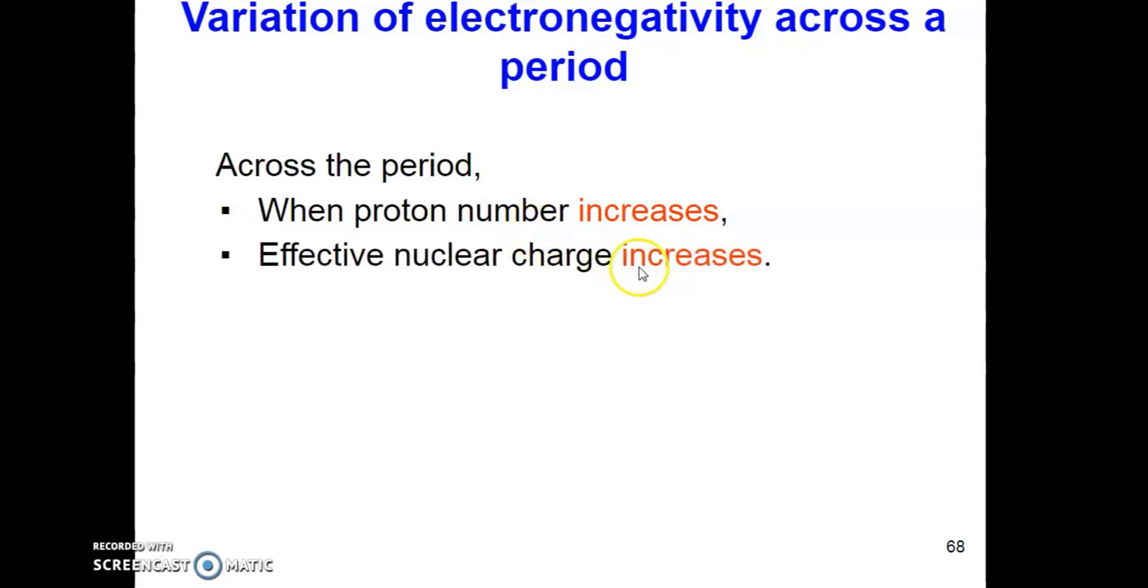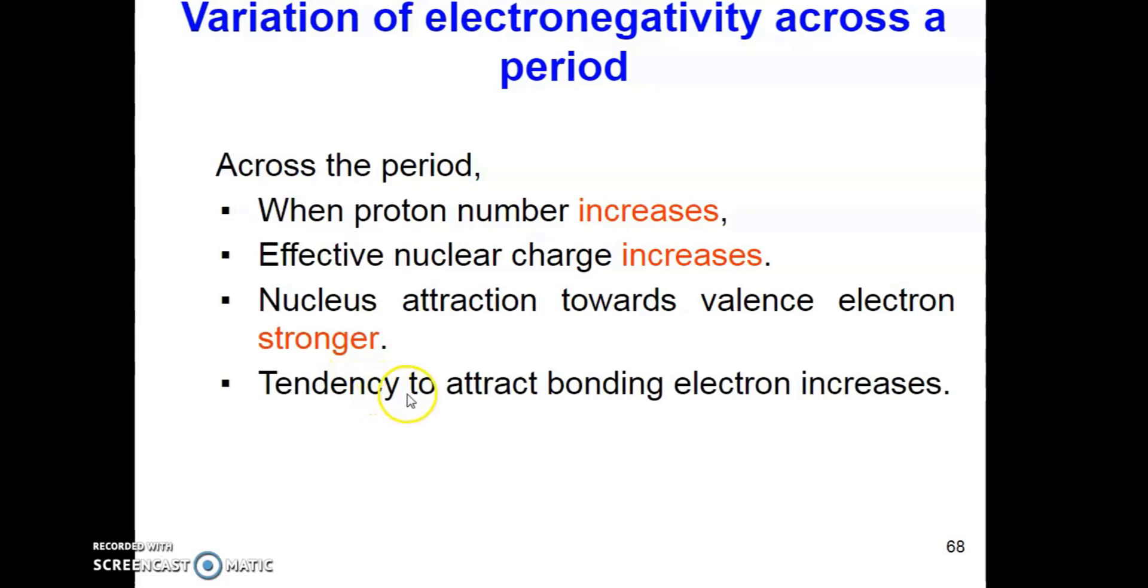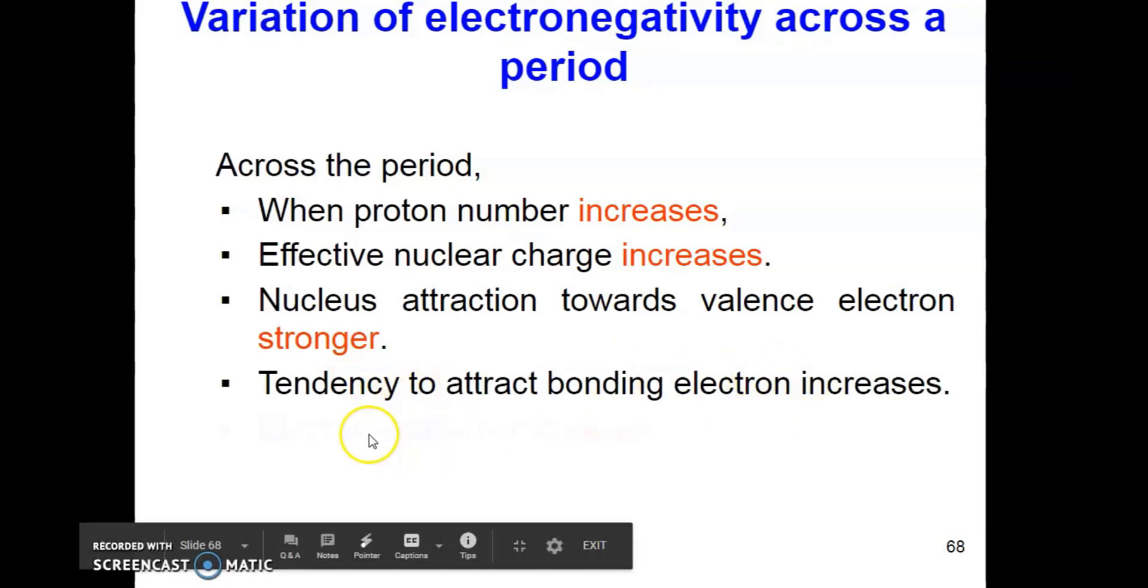Across a period, the charge on the nucleus increase. As we move across period, the number of protons in the nucleus of the elements increase. The effective nuclear charge also increase. Therefore, there will be increase in nucleus attraction towards the valence electron. Tendency to attract bonding electron also increase. Hence, electronegativity increase as we go across the period in the periodic table.